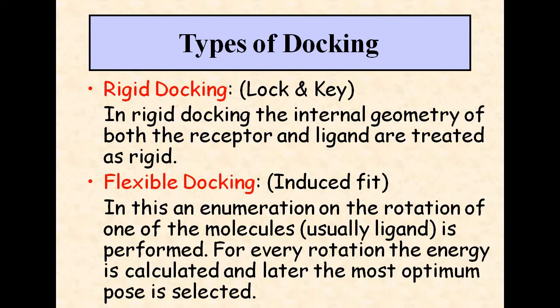There are two main types of docking. The first is rigid docking, which depends upon the lock and key hypothesis, in which the ligand fits perfectly into the receptor like a lock and a key. In rigid docking, the internal geometry of both the receptor and the ligand are treated as rigid.